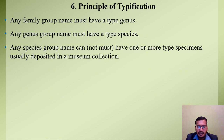This is the last and sixth principle of ICZN: the Principle of Typification. According to this principle, any family group name must have a type genus, any genus group name must have a type species, and any species group name can have one or more type specimens usually deposited in a museum collection. So a family must have a type genus, a genus must have a type species, but a species may or may not have type specimens.